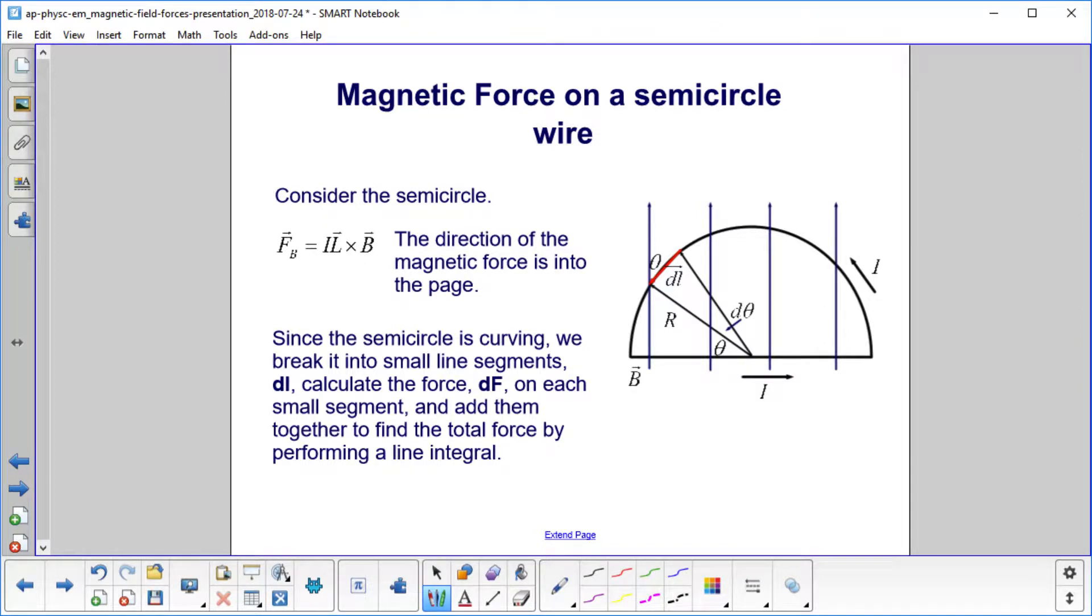Next, consider the semicircle. First of all, let's find the direction. Well, let's take up here. The current's going in this direction, so we point our four fingers in that direction. The magnetic field is up, so we face our palm up, and it turns out this time the magnetic force is into the page. And you can put your hand anywhere on the curve, and you'll get the same result.